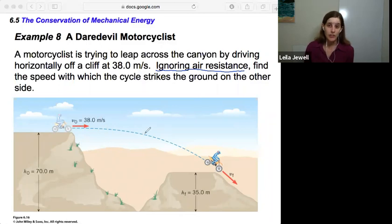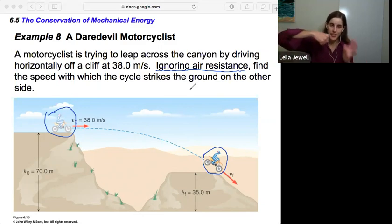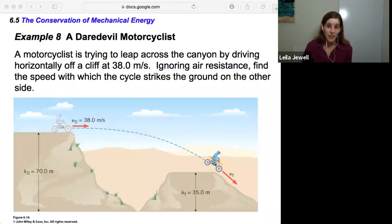And the reason we can do that is because the problem outright says that we can ignore air resistance. And once that motorcycle is traveling through the air, if we're ignoring air resistance, the only force acting on the motorcycle is the force of gravity, which is a conservative force. Since it's a conservative force, we can use our conservation of mechanical energy. And we'll compare the point at the beginning to the point at the end. When the cycle, when it says strikes the ground, that's the speed just before it is hitting the ground, the speed that it is just starting to impact the ground with, which is going to be the largest speed possible.